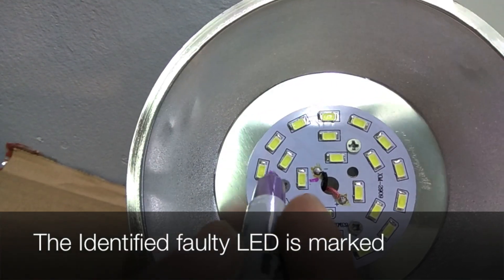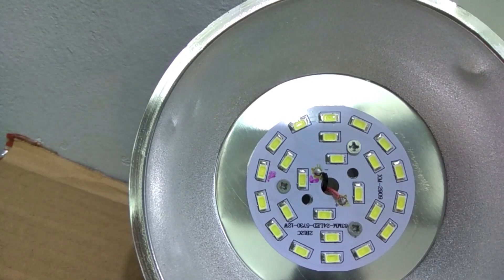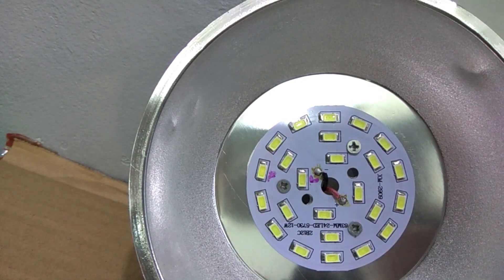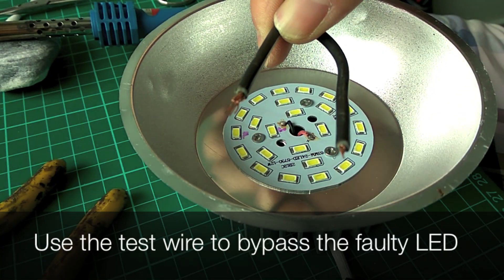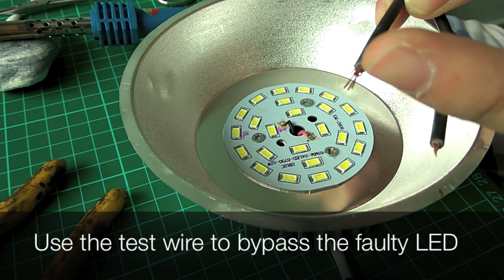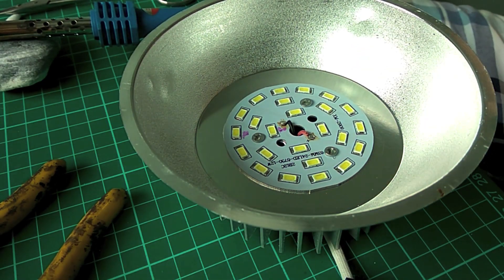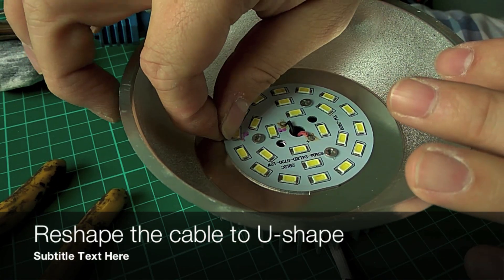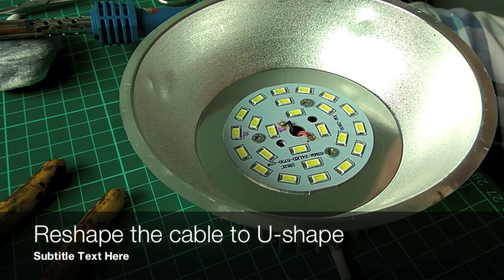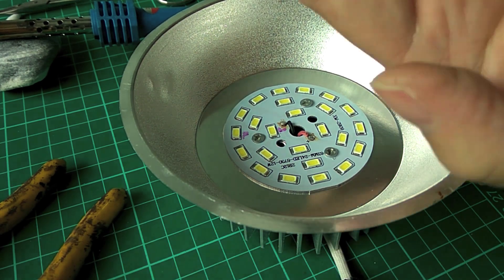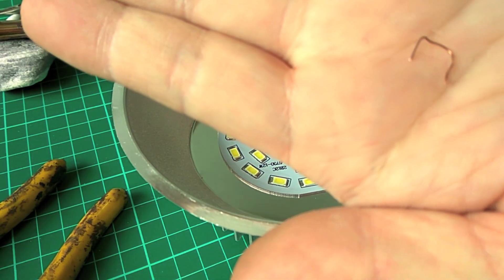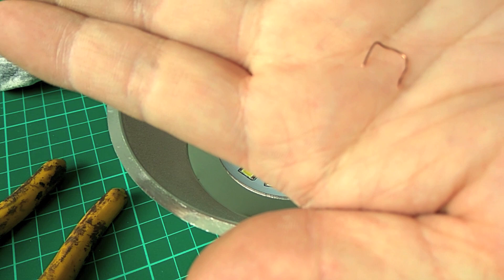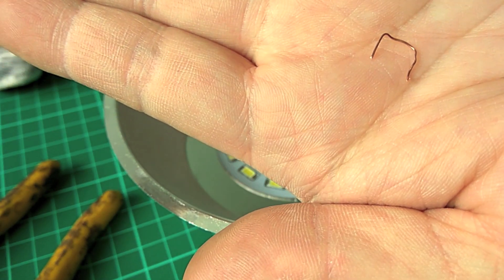The faulty LED is then marked so that I can use the marking for my rework later. By using a cable, cut a short piece of the length and shape it into a U-shape that fits one of the LED sides. The U-shape cable will be used to bypass and short the faulty LED.